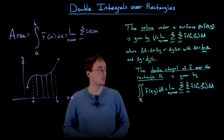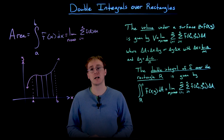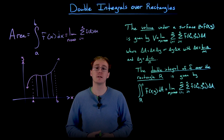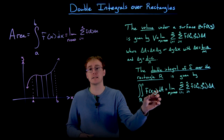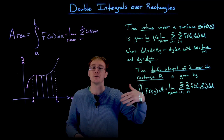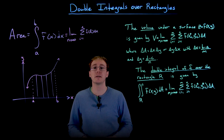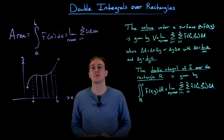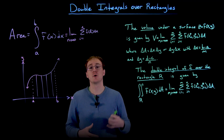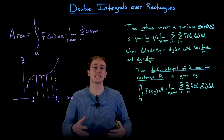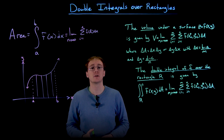Now we have our notation for double integrals as well. We use two integral signs to denote the double integral; below those signs we have the symbol for the region we are integrating over, in this case r. Following the double integral sign is the function we are integrating. We always remember our differentials — now we have a differential of area involving both dx and dy instead of just a single dx as in single variable integrals.